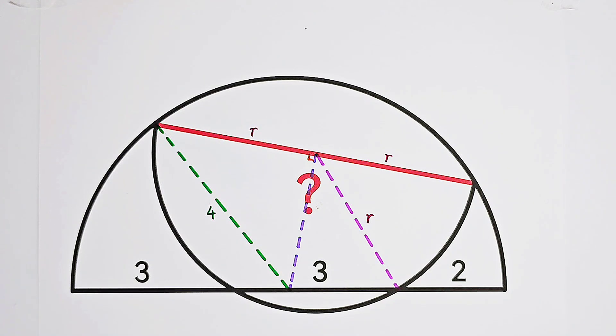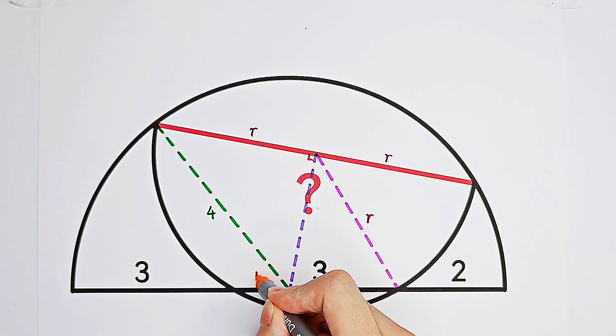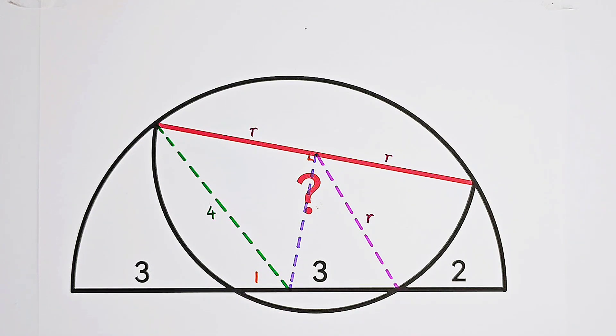Now have another good look at our big diameter. This one is our big radius, which measures 4. And this piece measures 3. So that means this one is just 1. 4 minus 3 equals 1. So this one measures 2.